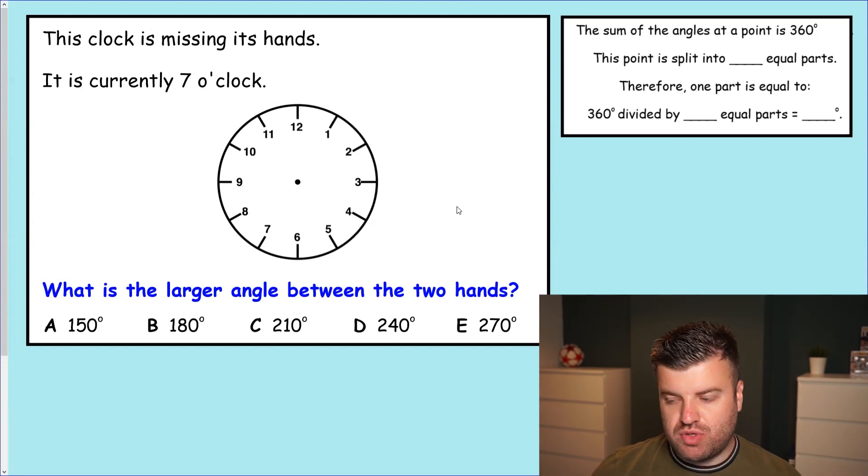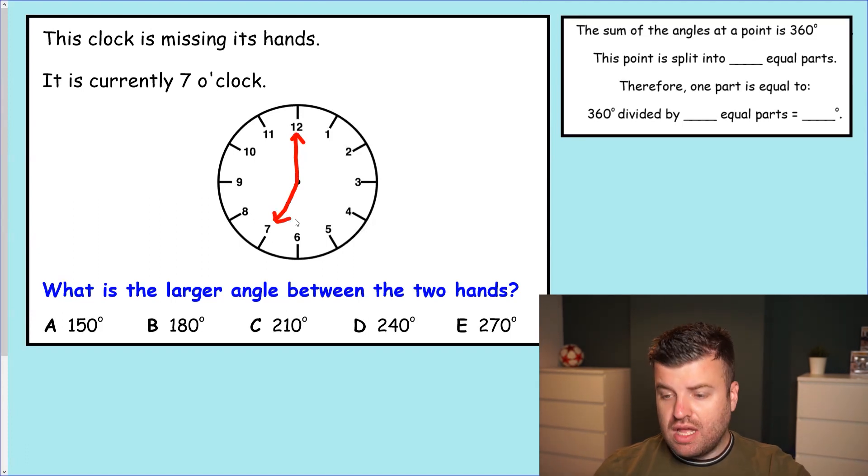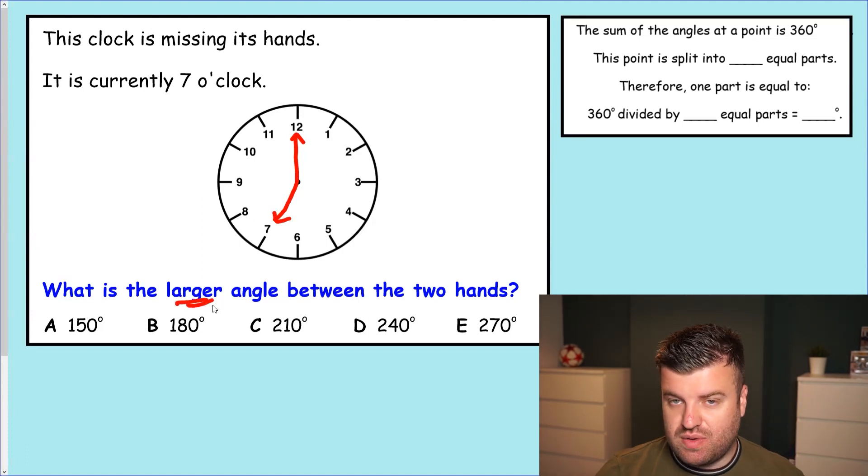It's currently 7 o'clock. What is the larger angle between the two hands? There's loads of ways here this is trying to trick us. But the first thing is let's just draw in a rough 7 o'clock. So that's just up to 12. That's down to 7. Okay, so we're at 7 o'clock. What is the larger angle between the two hands? Can you see how there are two angles here? There's a smaller angle here from 12 to 7, but the larger angle is going this way.